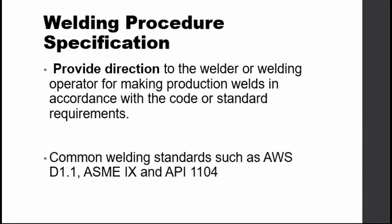A WPS, or Welding Procedure Specification, provides direction to the welder or welding operator for making production welds in accordance with code or standard requirements. The WPS provides in detail the required welding variables for the specific application to assure repeatability by properly trained welders. The welding inspector needs governing documents for the welders to follow. Common welding standards such as AWS D1.1 structural code for steel, ASME welding and brazing specification, and API 1104 welding of pipelines and related facilities are just some of the codes and standards that provide guidance on how a WPS shall be created and qualified.